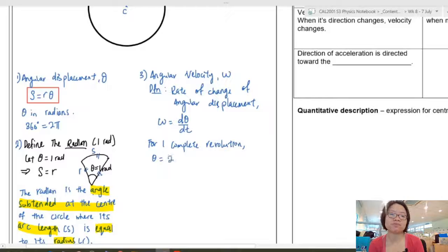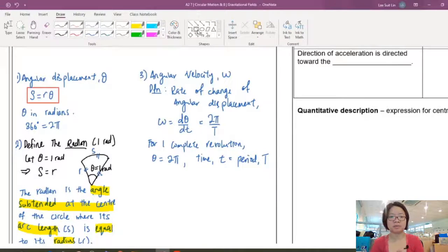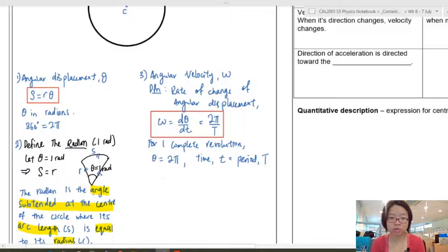Okay. So for one complete revolution, we will assume that theta, not assume, we know that theta is 2 pi. So then the time taken for one complete revolution is also known as the period. So another way to find omega is to take 2 pi divided by period. This will be very useful also in the subsequent chapters.